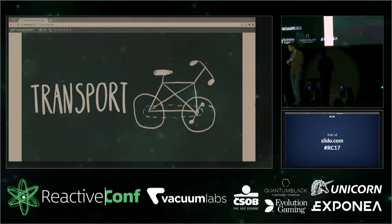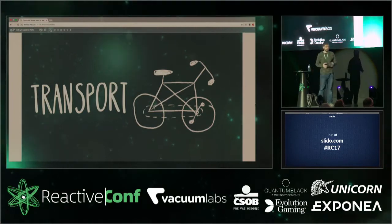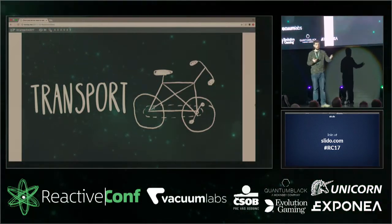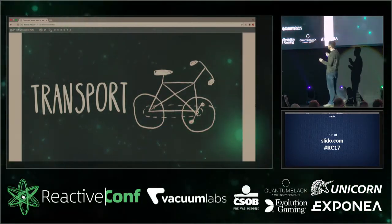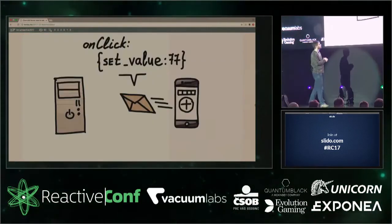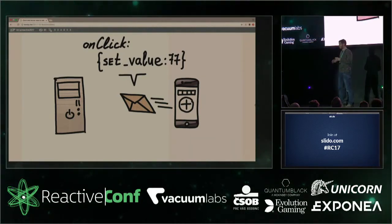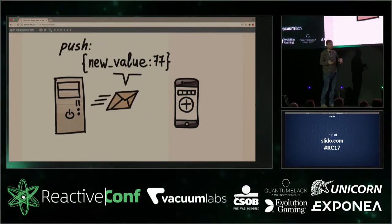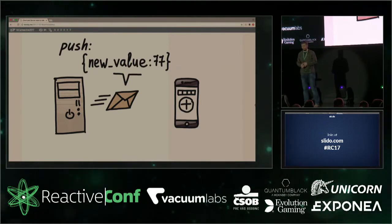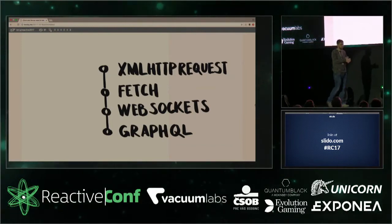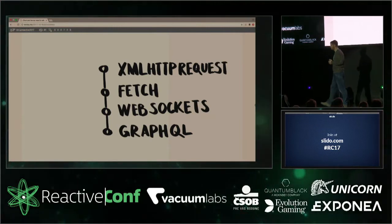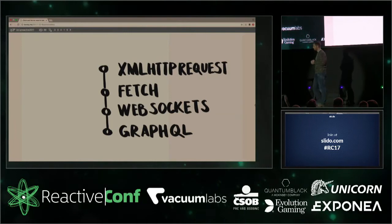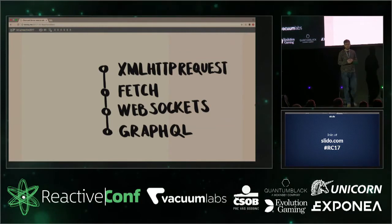To implement this you basically need two things: transport to carry your data over the network, and data structures — what you're actually transferring. For transport, since the task is very simple, the protocol would be really simple: you send a message like 'set value' with just a value, and the server sends back something like 'new value available, please update your counter.' Because it's so simple, you'd probably use basic tools like XMLHttpRequest, the Fetch API, WebSockets, or Server-Sent Events.